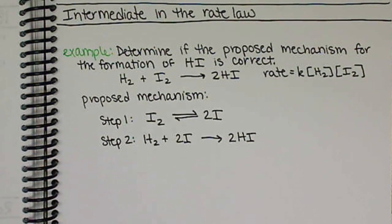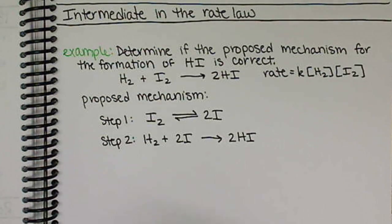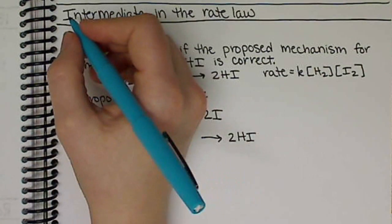So when we have an intermediate in the rate law, we're going to use the fast elementary step to replace that intermediate.